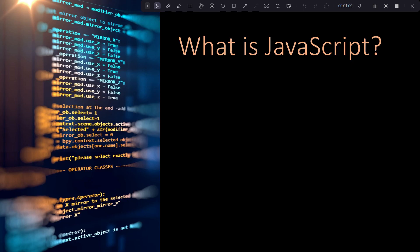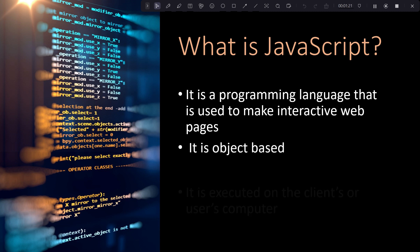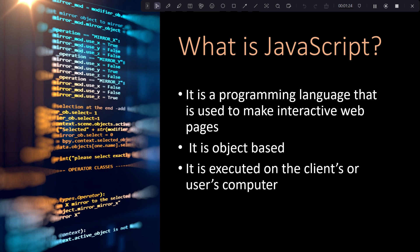JavaScript is basically a programming language, just like other programming languages, although this language is specifically used for making web pages interactive. It is object-based and it is executed on the client or user's side. The idea here is that JavaScript is actually executed on the browser that you're using — whether that's Chrome, Firefox, or Internet Explorer. The code you run for JavaScript is executed from your browser, not from the server side.